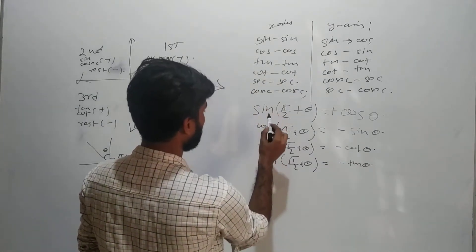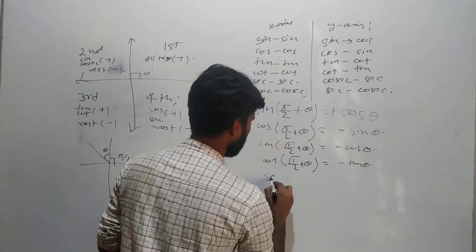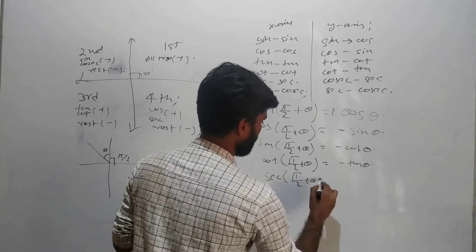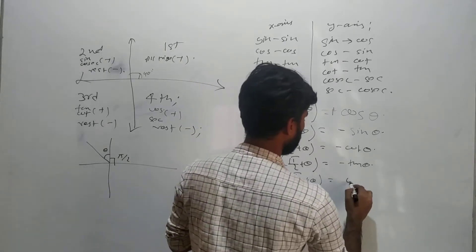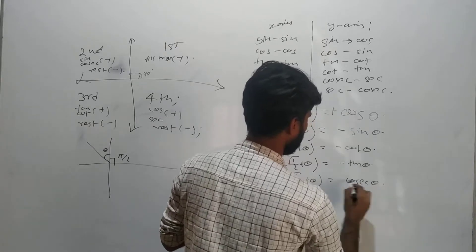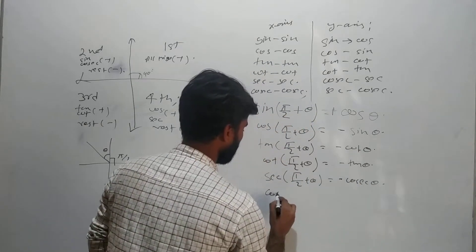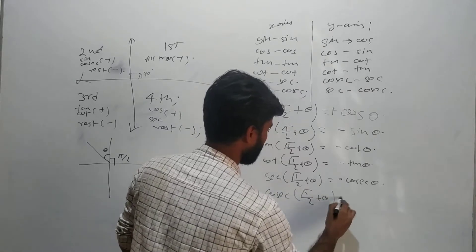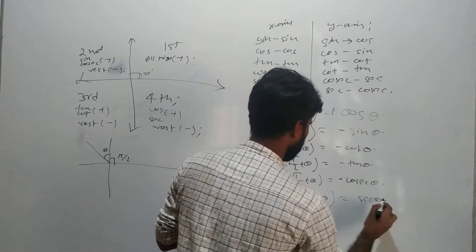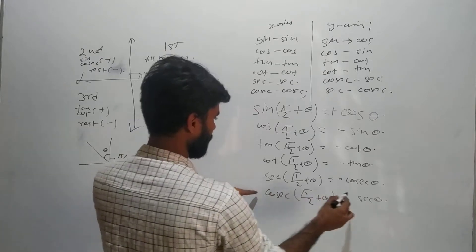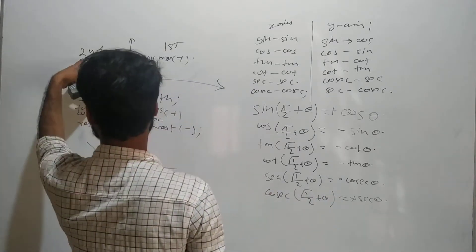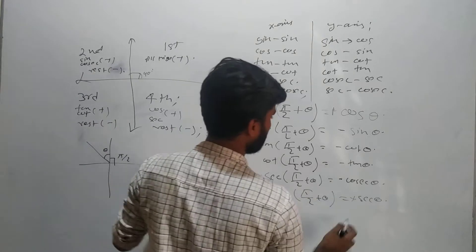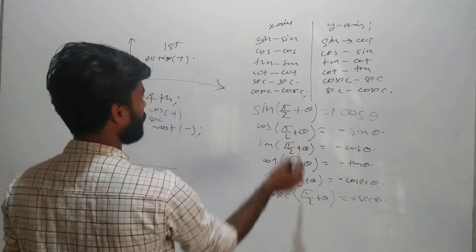What is left? Sine, cos, tan, cot are done. Next, sec(π/2 + θ): this will change into cosec θ, and this will be negative. Now, cosec(π/2 + θ): this will change into sec θ, and this will be positive — because cosec is the reciprocal of sine, and sine is positive in the second quadrant. So cosec(π/2 + θ) = +sec θ.